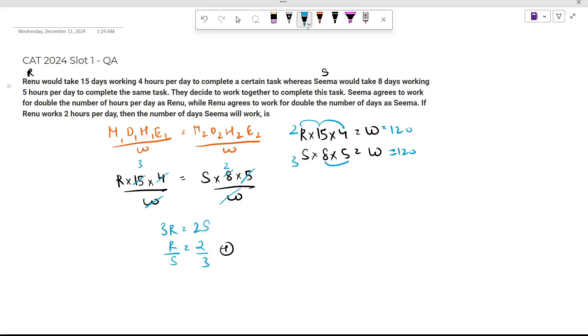Now let's proceed further. They decided to work together to complete this task. Sima agrees to work double the number of hours per day as Renu. That means if Renu works for x hours per day, then Sima would work for 2x hours per day. Renu agrees to work double the number of days as Sima. That means if Sima works for y days, then Renu would work for 2y days.